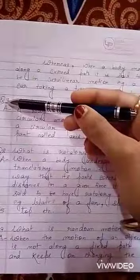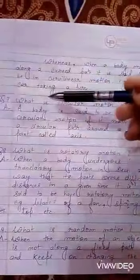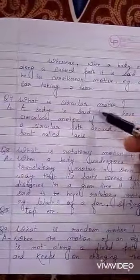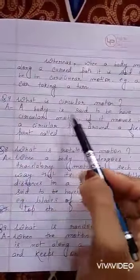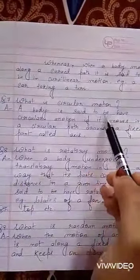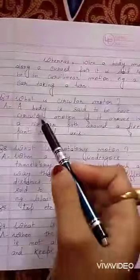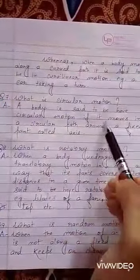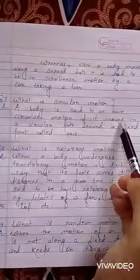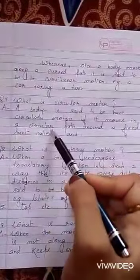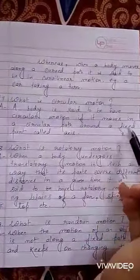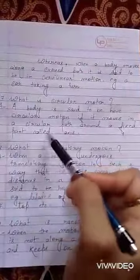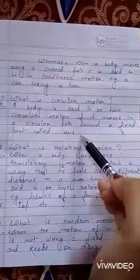Next question is question number 7: What is circular motion? Answer: A body is said to have circular motion if it moves in a circular path around a fixed point called axis.